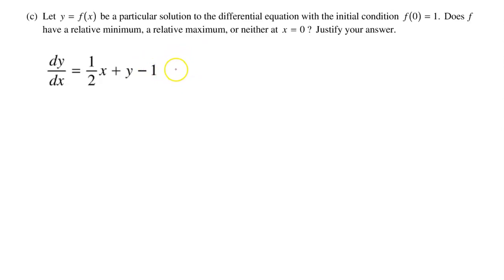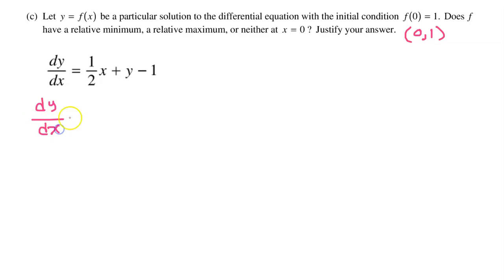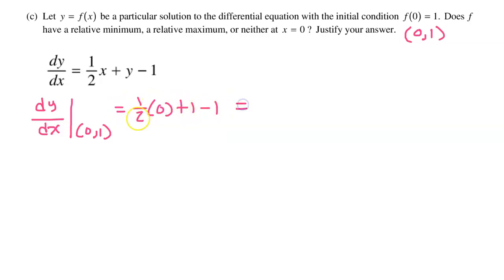For the second derivative test, step one is to verify the first derivative equals zero at the point of interest. The initial condition f(0) equals 1 gives us the point (0, 1). Evaluating dy/dx at (0, 1): one-half times zero plus 1 minus 1 equals zero. So the first derivative is indeed zero at (0, 1).